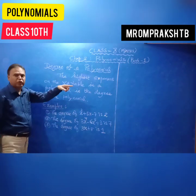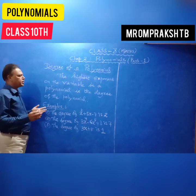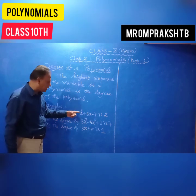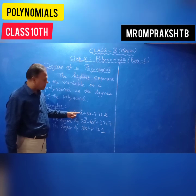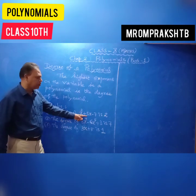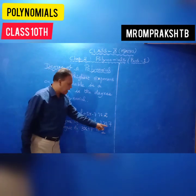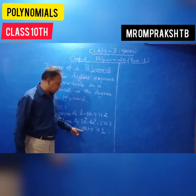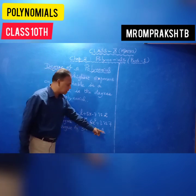Next, we will see the degree of a polynomial. The highest exponent on the variable in a polynomial is the degree of the polynomial. For example, in 2x squared plus 3x plus 5, the highest power is 2, so the degree is 2. In another polynomial with highest power 7, the degree is 7. If the highest power is 1, then the degree is 1.